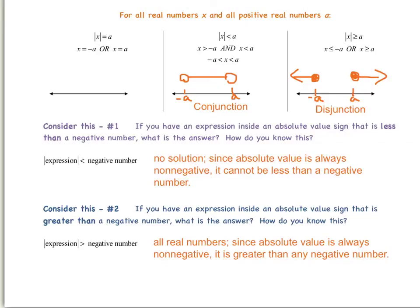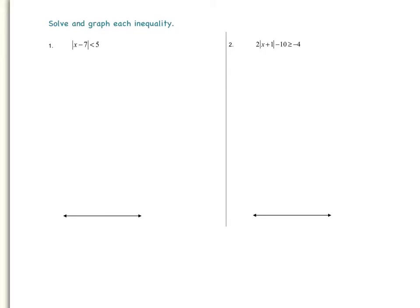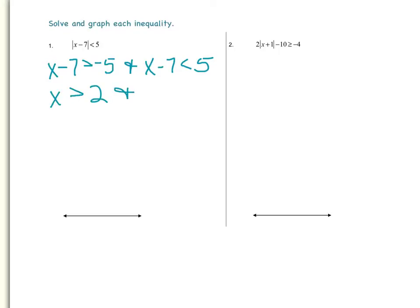Now let's look at some examples. Our first example is the absolute value of x minus 7 is less than 5. We will write this as a conjunction: x minus 7 is greater than negative 5, and x minus 7 is less than 5. Now let's solve each inequality. On the first one, we add 7 to both sides, so we have x is greater than 2. For the second one, we also add 7 to both sides, so we have x is less than 12.